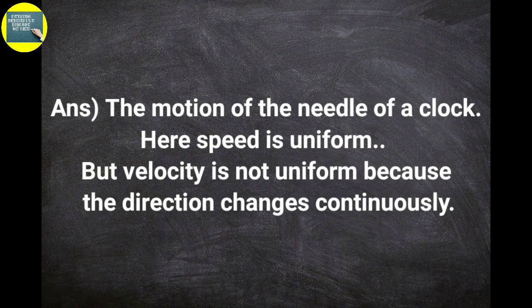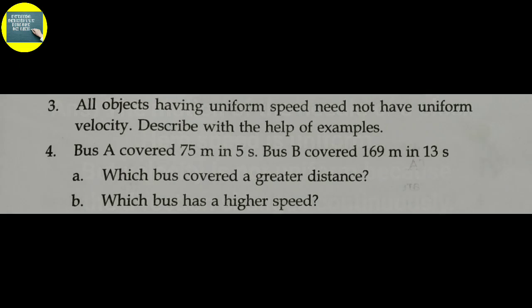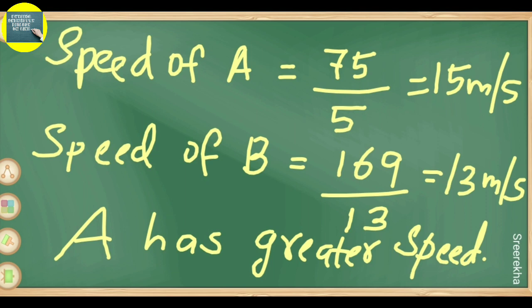Fourth question: Bus A covered 75 meters in 5 seconds; Bus B covered 169 meters in 13 seconds. Which bus has a higher speed? Speed of A equals distance divided by time: 75 divided by 5 equals 15 meters per second.